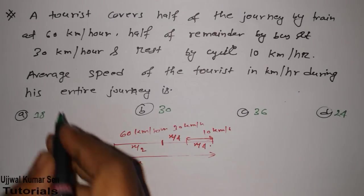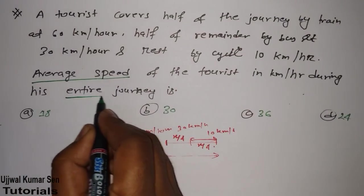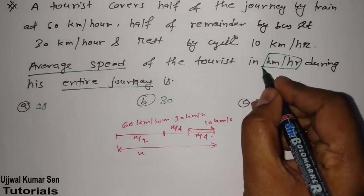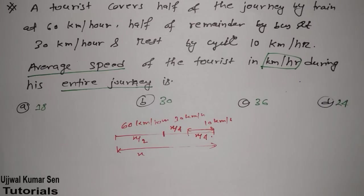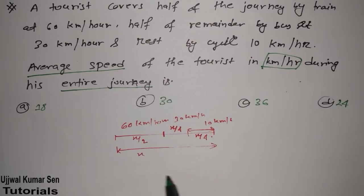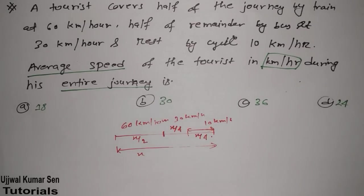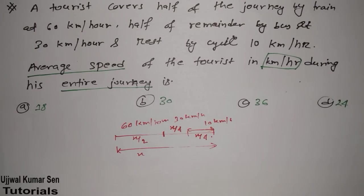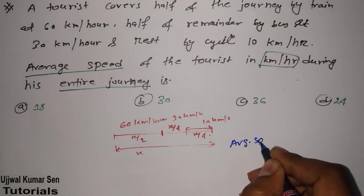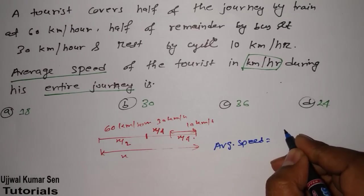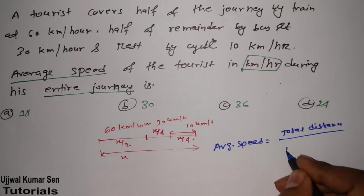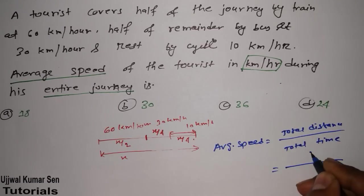We need to notice two things: in which unit we need to find the answer, and what exactly we need to find. Once we know this, we can solve the problem correctly. Average speed equals total distance divided by total time. Here total distance is x. Now I need to find the total time, which I can calculate from each segment.